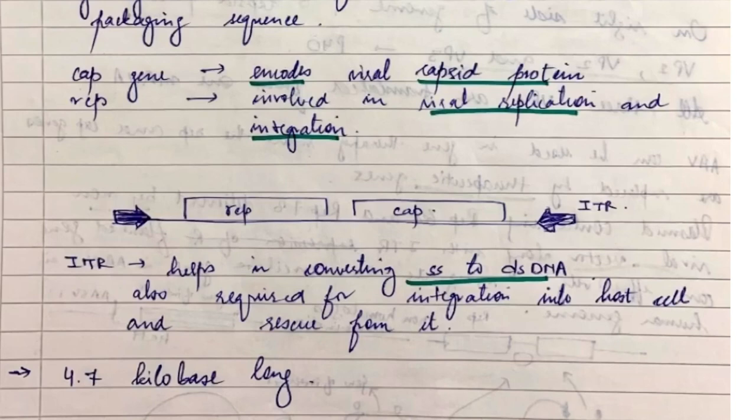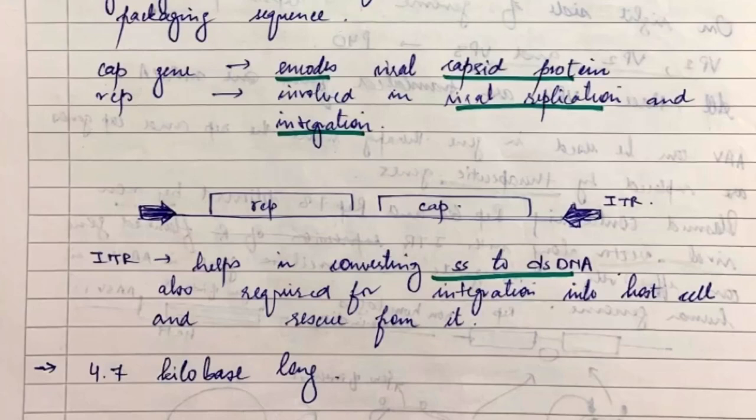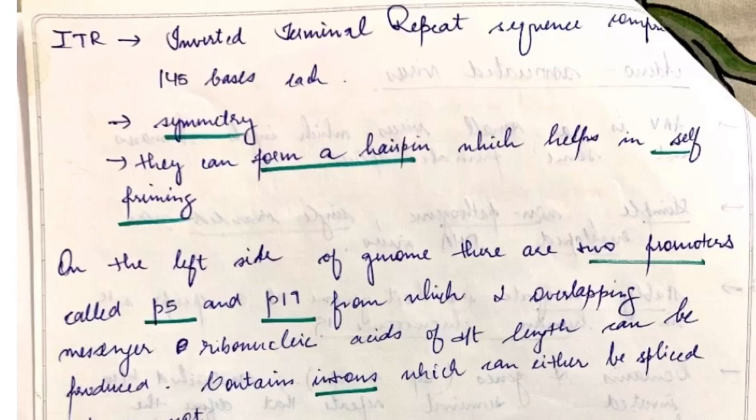Inverted terminal repeats contain two types of genes: cap and rep gene. The cap gene encodes viral capsid protein. The cap ones are the structural genes and the rep ones are the packaging genes that are involved in viral replication and integration.